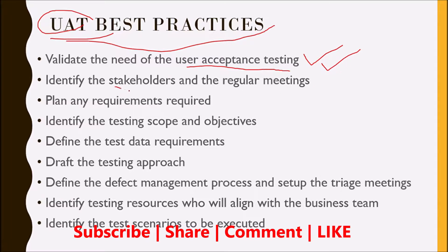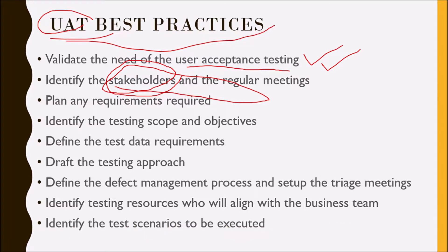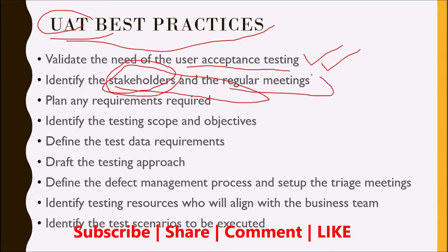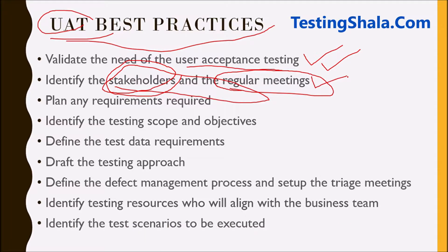If UAT is required, we should identify the stakeholders who are going to perform UAT. Normally UAT will be performed by the end users or clients. The support we should provide from the testing team includes environment readiness and all necessary information. We should also set up regular meetings with them to get status updates and help them on any issues.